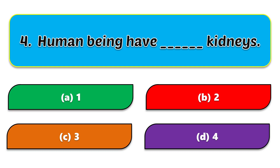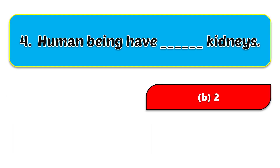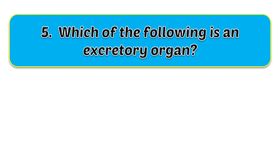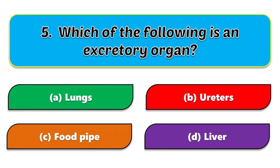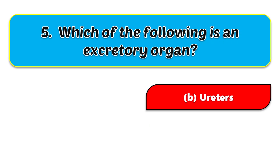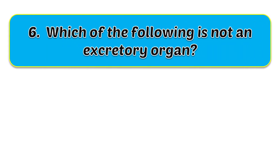Fourth question: human beings have how many kidneys? The options are one, two, three, and four. The correct answer is two. Fifth question: which of the following is an excretory organ? The options are lungs, urethra, food pipe, and liver.